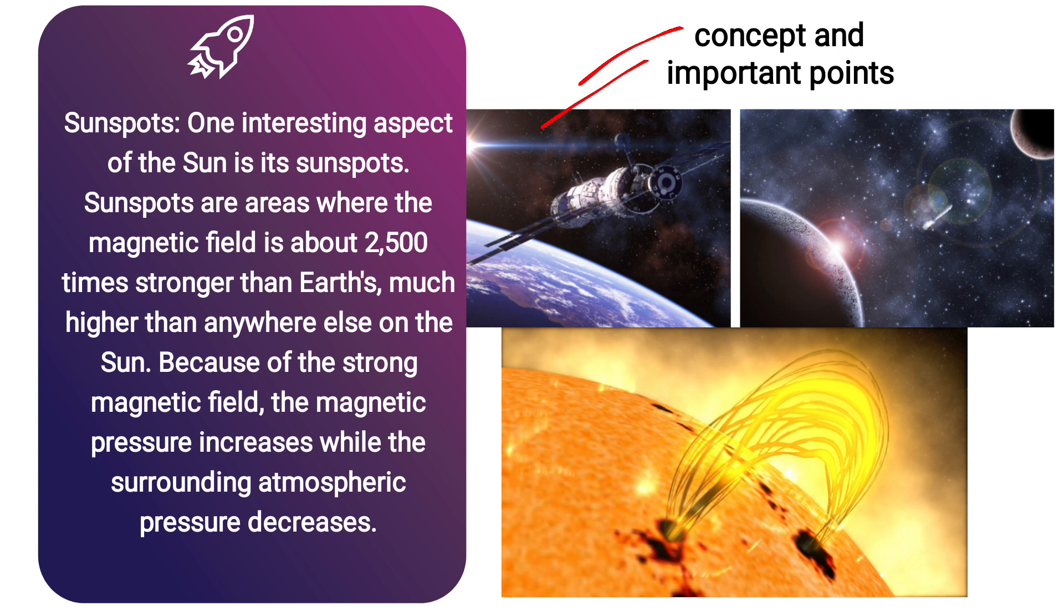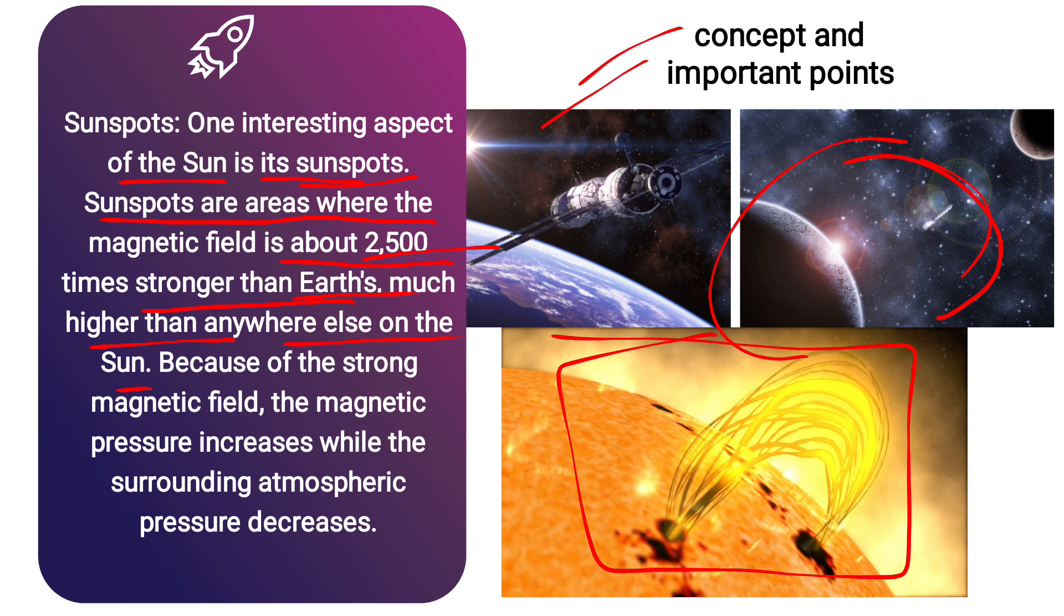One interesting aspect of the sun is its sunspots. Sunspots are the areas where the magnetic field is about 2,500 times stronger than Earth's, much higher than anywhere else on the sun. Because of the strong magnetic field, the magnetic pressure increases while the surrounding atmospheric pressure decreases. That means whenever this surrounding temperature of the sun decreases, the magnetic field increases. You can see these are the magnetic lines that have been found because of the sunspots.